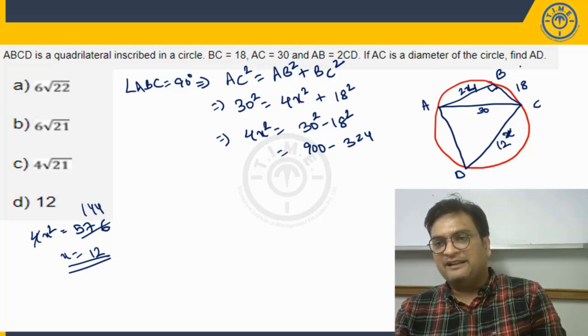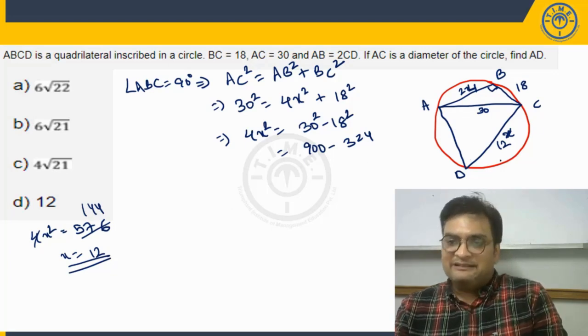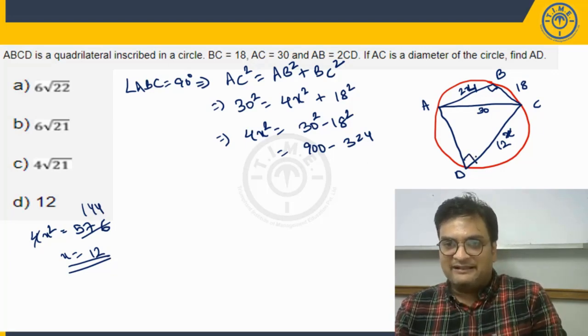Now look at the question. He is asking me to find AD. He is asking me to find AD here. So for finding AD, what we could do is again, this angle here is going to be right angle, angle ADC.